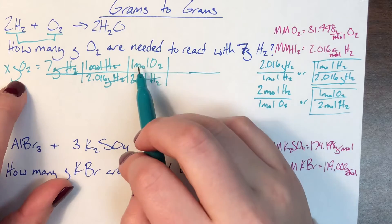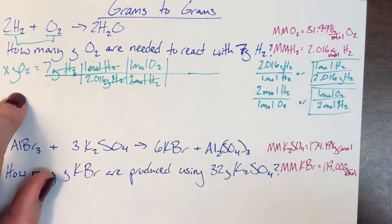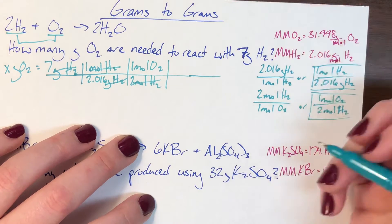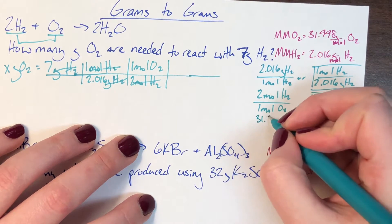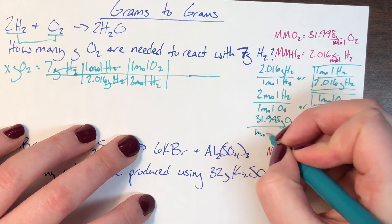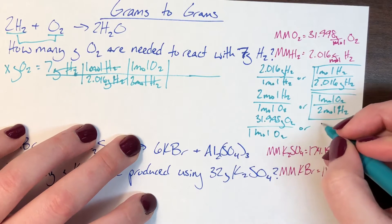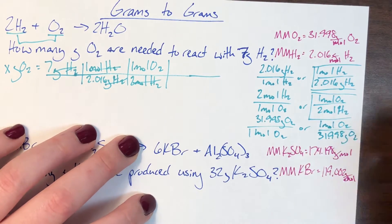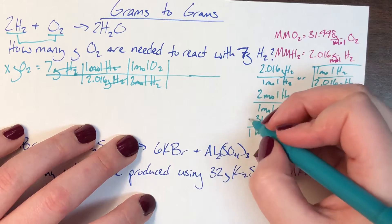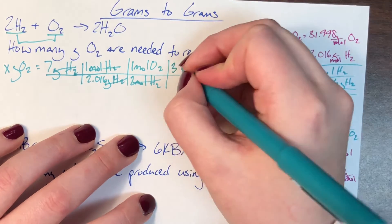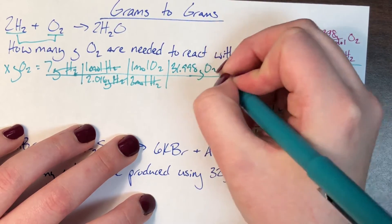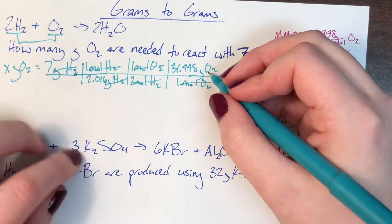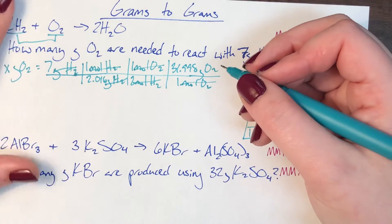This gets me out of hydrogen and into oxygen, which is the goal compound, but I'm not in the goal unit — I'm in moles and I need grams, so I need a molar mass again, this time for oxygen. For every 31.998 grams of O2 there is 1 mole of O2, or for every 1 mole of O2 there are 31.998 grams of O2. I pick the version that cancels moles of O2, writing 31.998 grams of O2 on top and 1 mole of O2 on the bottom. Moles of O2 cancel, leaving grams of O2.